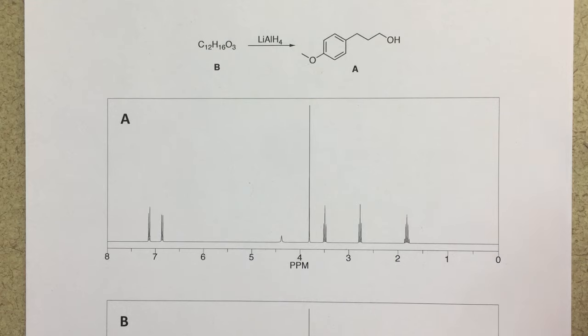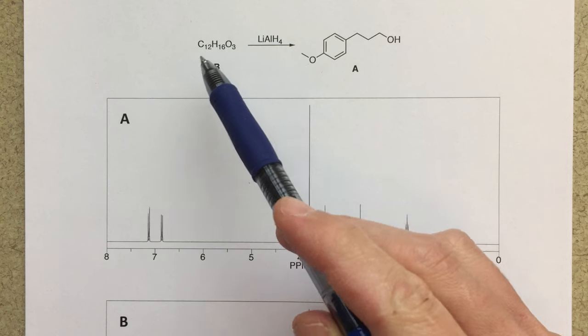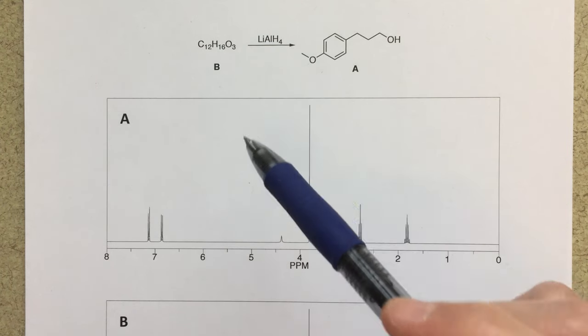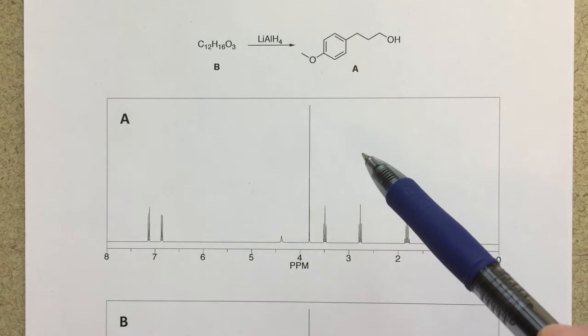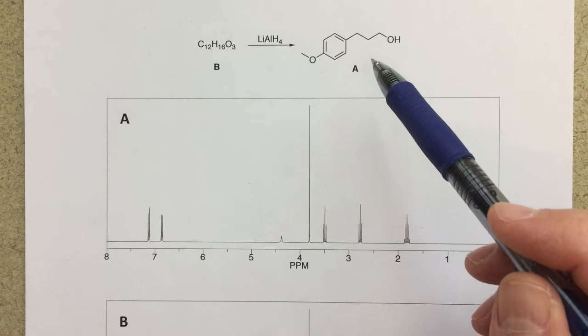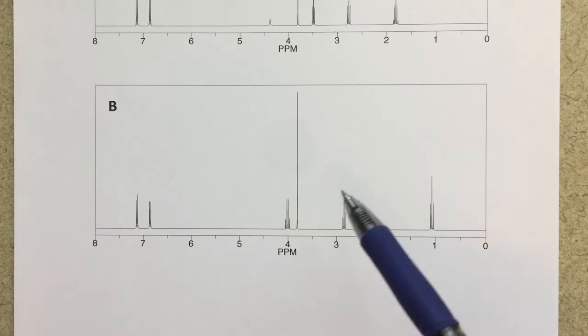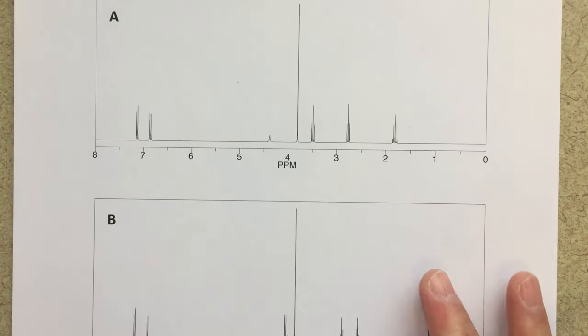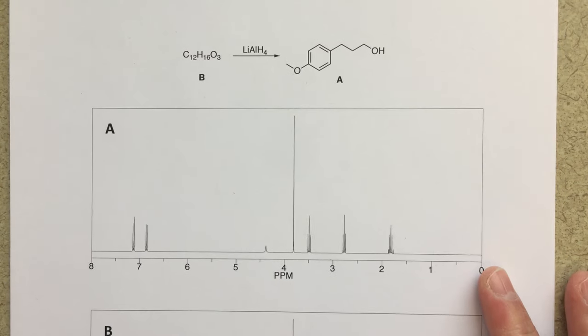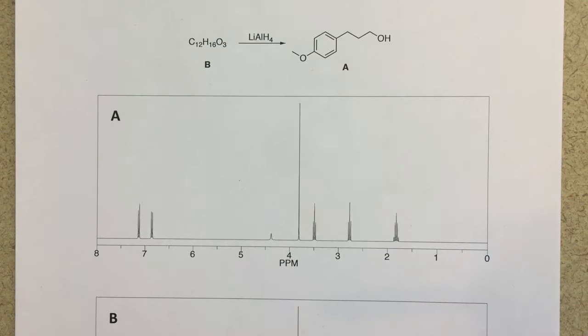So in any case, this NMR problem, what we've got is we've got some unknown structure for B, we've got a molecular formula which is nice, and then we're going to do a reaction with lithium aluminum hydride to form this new alcohol. Now we are given the proton NMR spectrum for A, that's this spectrum here, and we're also given a proton NMR spectrum for B. So using this proton NMR spectrum, we should be able to figure out what the structure for B is, and that is the goal of this problem. But since we've got the spectrum for A, I think it's a good idea just to go ahead and assign the spectrum for A first.